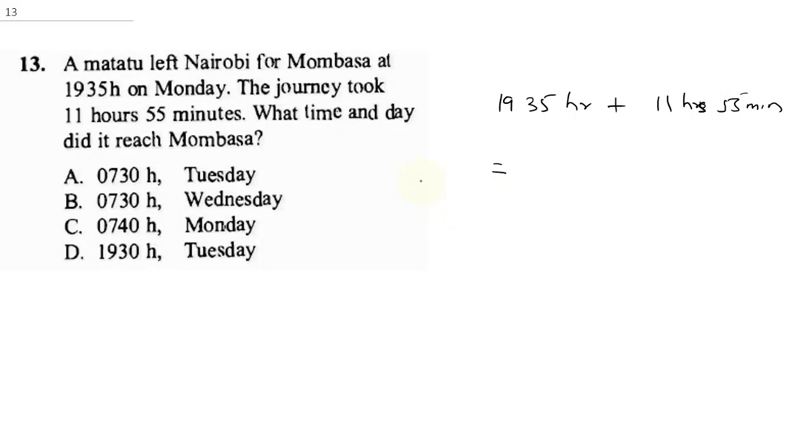In order to sum this up, when you do 19h plus 11, you need to know that this will take you to the next day. Let's add 1935h plus 11 hours. When you add 11 hours, it will take you to the next day, and it will give you 635. And this should be 635 the next day, that's Tuesday.